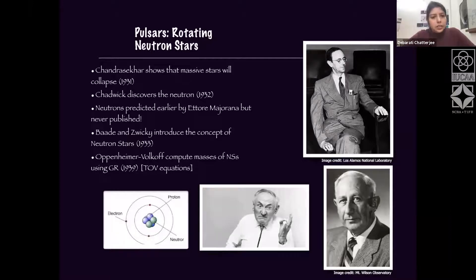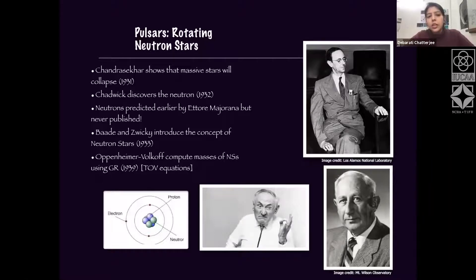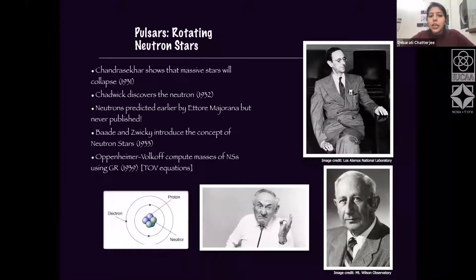In 1931, Chandrasekhar had already shown that massive stars may collapse, and in 1932 Chadwick discovered the neutron — although neutrons were already predicted earlier by Majorana, but not published. Baade and Zwicky then introduced the concept of neutron stars comprising these neutrons in 1933. Then Oppenheimer and Volkoff computed the structure of neutron stars using general relativity in 1939.